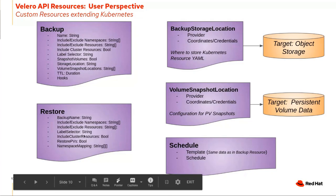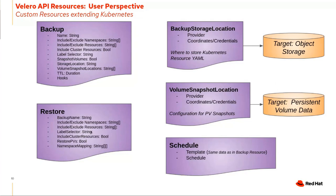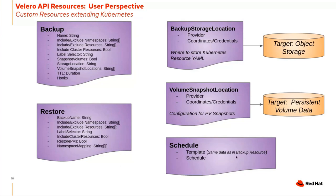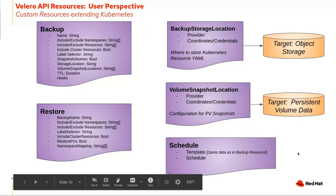Restore is the ability to restore from a backup, potentially taking a granular set of resources. A backup storage location is where the Kubernetes resource data is stored, along with PV metadata like CSI snapshot information or cloud provider snapshot info. A volume snapshot location defines where to take snapshots for PVs.